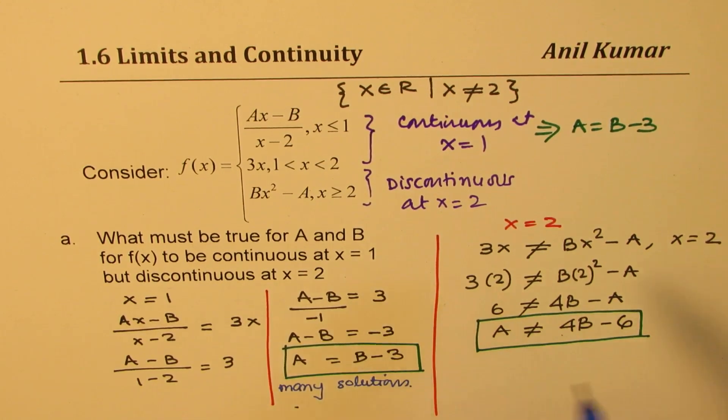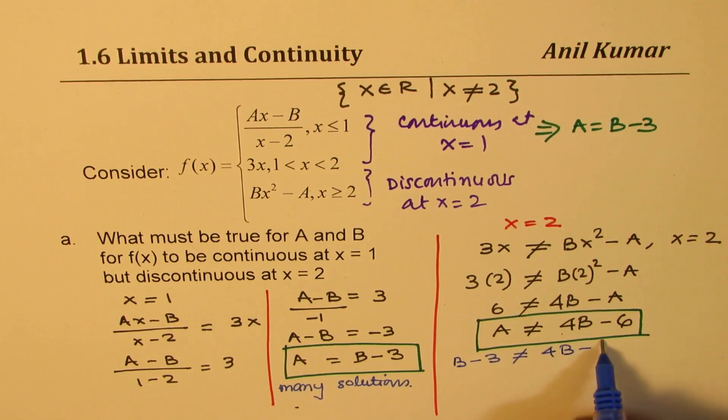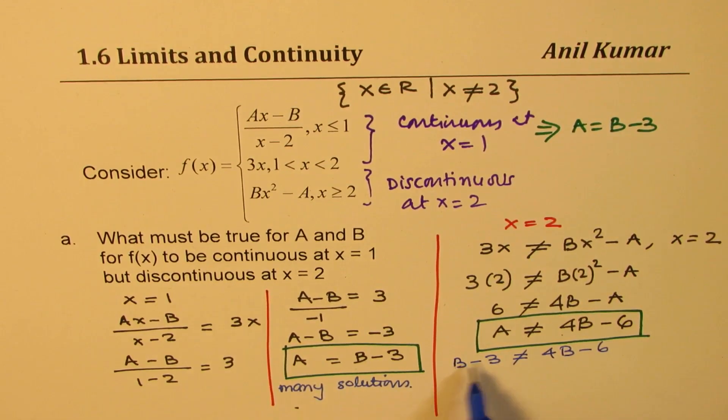So that should also be met. If I replace A with B minus 3 here, then what do I get? Let's try to explore that also. So if I replace A with B minus 3, but at B minus 3 it is continuous. So let's see what do we get. 4B minus 6, so bringing this on this side and 6 on this side we get 6 minus 3 not equal to 4B minus B.